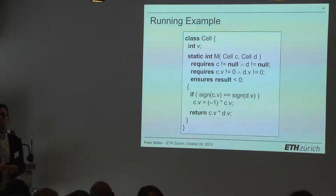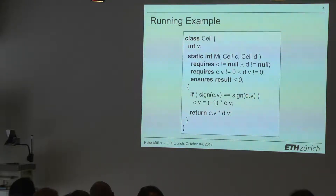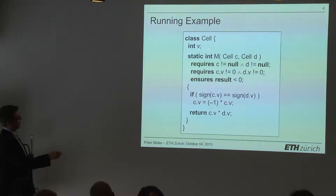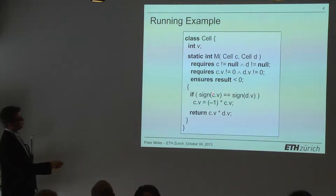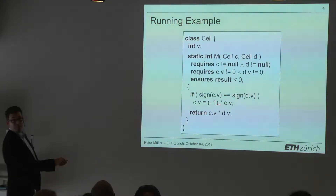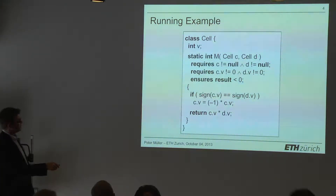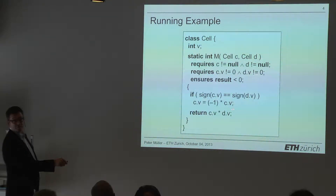Here's an example I'll use throughout the talk. Written in Java or C# style notation: I have a class Cell with an integer V, and a method that takes two cells. The preconditions require that both cells are non-null and the values are non-zero. The postcondition promises the result will be negative. I compare if the signs of the two values are the same; if so, I change the sign of one by multiplying by minus one, then return the product. The reasoning is that C.V and D.V will have different signs, so their product is negative.